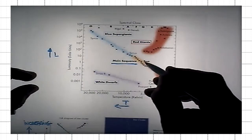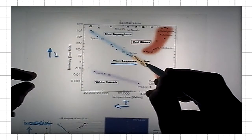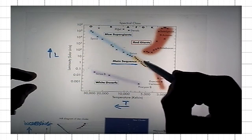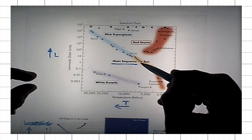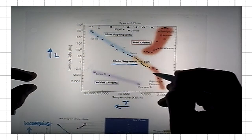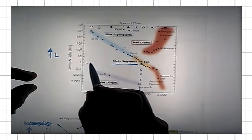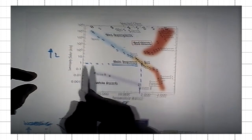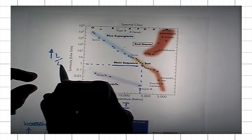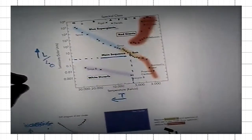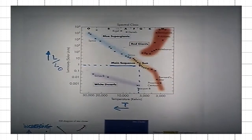Our Sun happens to be a main sequence star at the present moment. It's kind of in the middle of the main sequence. Its surface temperature is about 6,000 degrees, and its luminosity is one, because luminosity is given here in terms of solar luminosities. This is the main sequence group, and in fact, it turns out that over 90% of all stars that we observe are the main sequence stars.